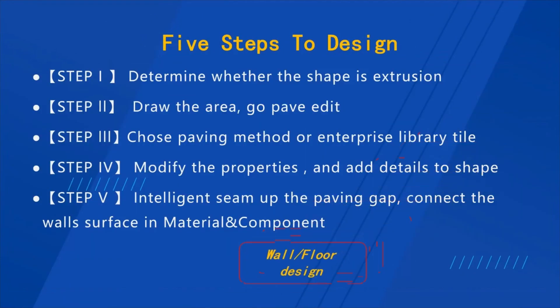At the end of the class, let me make a summary of the design steps. First, determine whether the shape is extruded. Then draw the area. Go into paving editing if there is a complicated paving. Choose the paving method or select from your enterprise library. Modify properties for patterns and gaps, and add details to the shape — like adding a light strip and applying material on the elevation. The last step is to sync up the paving gap and connect the wall surface or floor surface in the material and component.